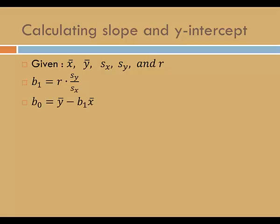We'll use the slope to find the y-intercept. Multiply the slope by the mean of the explanatory values, subtract this product from the mean of the response values.